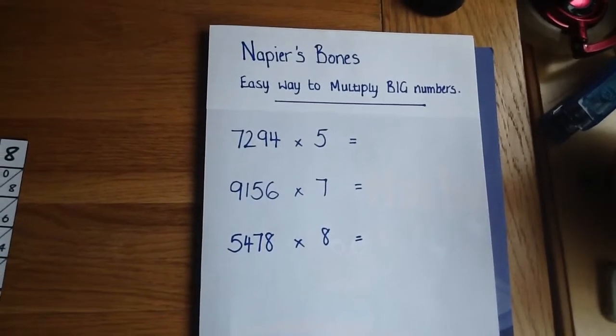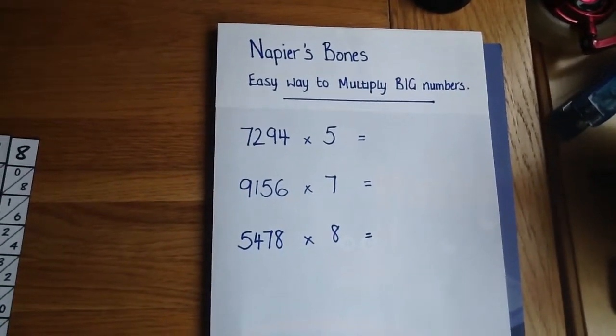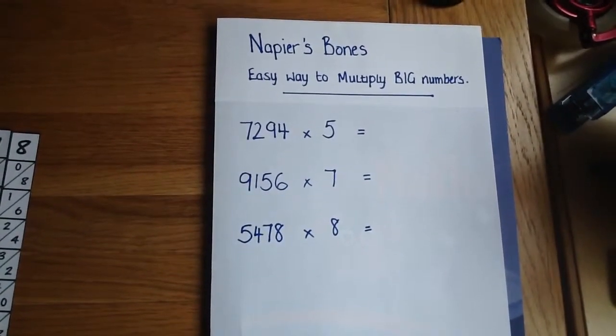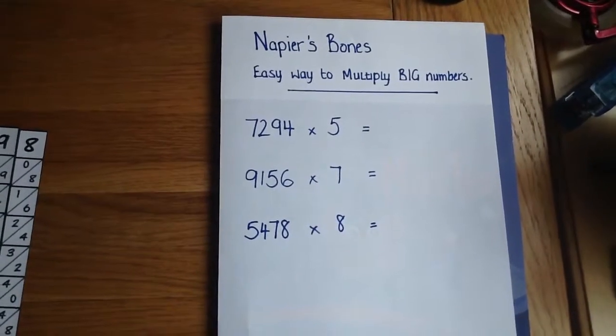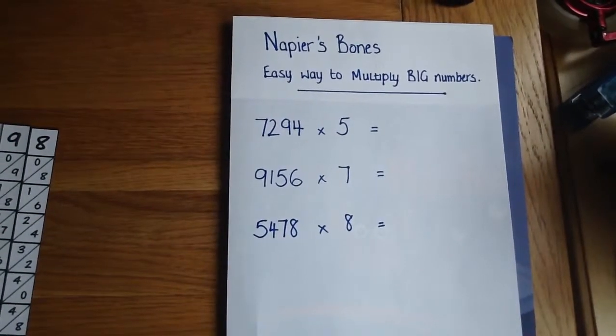It's a quick, fun, easy way to multiply big numbers. As you can see we've got 7294 times 5, 9156 times 7, and 5478 times 8.